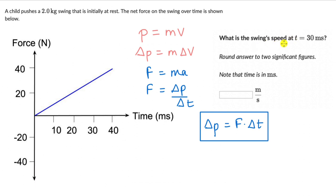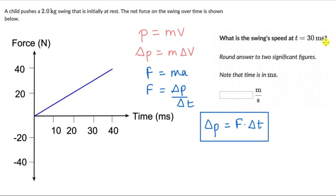We need to think about the swing's speed at T equals 30 milliseconds. If we know the final momentum — that is, momentum at 30 milliseconds — we know the mass and can then figure out the final velocity. Initially, the momentum is zero because it is starting from rest, so delta P is just final minus initial. If we know the final momentum, we can figure out the final speed.